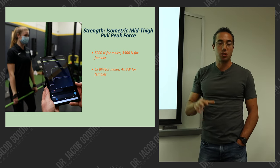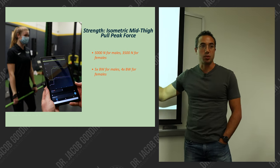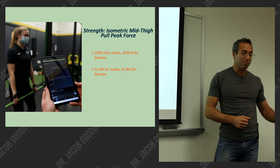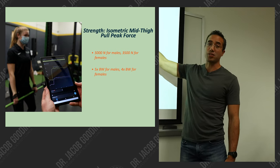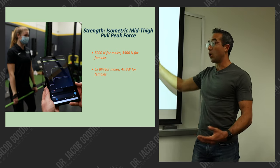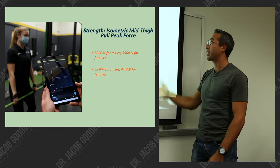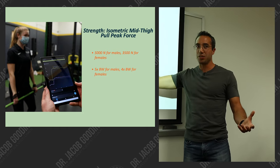Some of the most commonly identified benchmarks for peak force in the IMTP are 5,000 newtons for males—this is usually including their body mass—or 3,500 for females. Another common one is 5 times body weight for males and 4 times body weight for females. An absolute benchmark and a relative benchmark. For your population or sport, it might be different. I've seen females pull over 6,000 newtons, and I've seen whole teams of males who could barely pull 2,000 newtons.